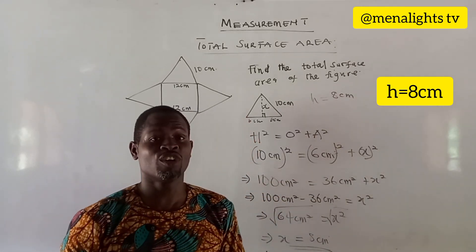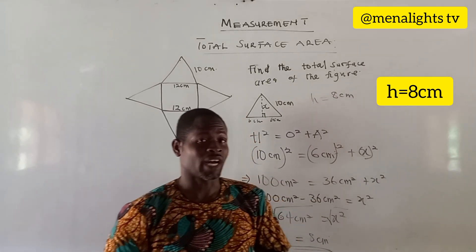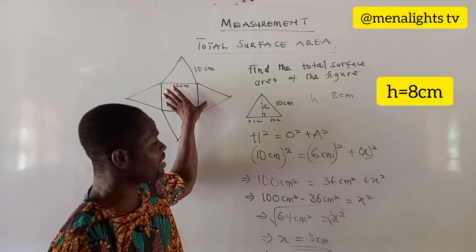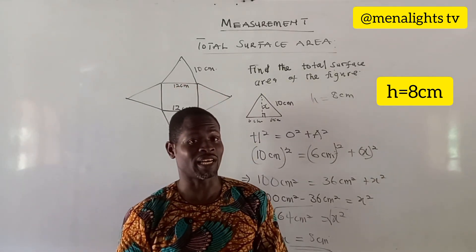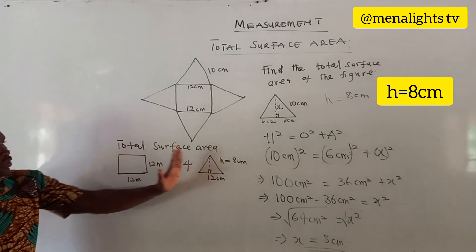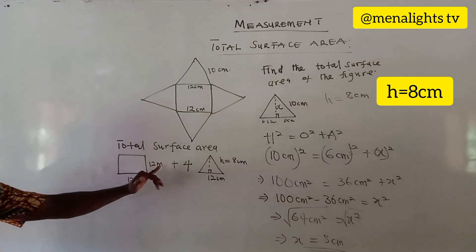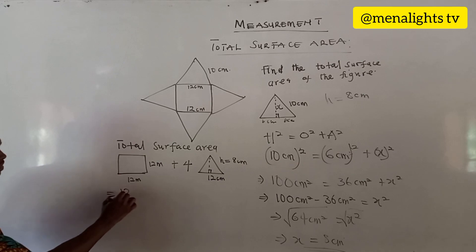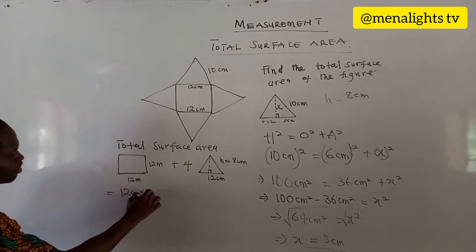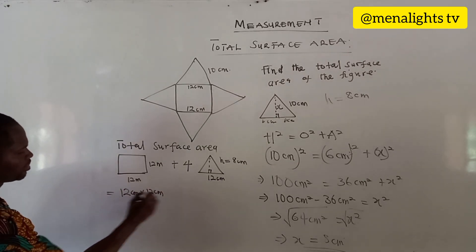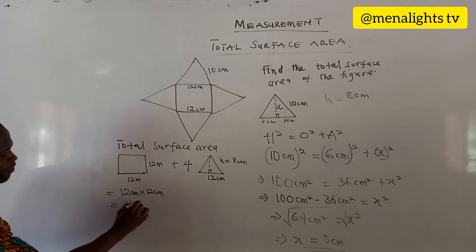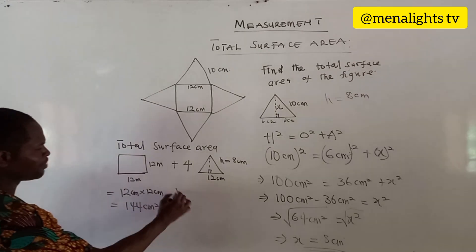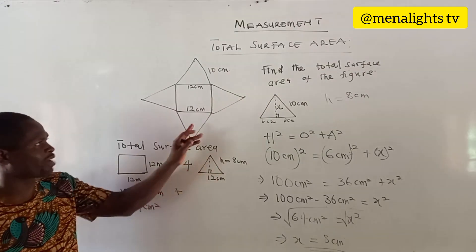Now that we know the height of the triangle, we can find the total surface area of this figure. The total surface area equals the area of the square plus the area of the 4 triangles. The area of the square is 12 cm × 12 cm, which gives us 144 cm².